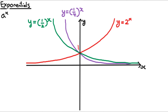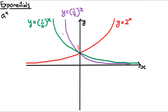If the fraction gets smaller, like in a quarter to the power of x, it will get smaller faster and rise quicker for negative values of x — which makes sense if you plug in the values. And again, it crosses the y-axis at 1 because anything to the power of 0 is 1.